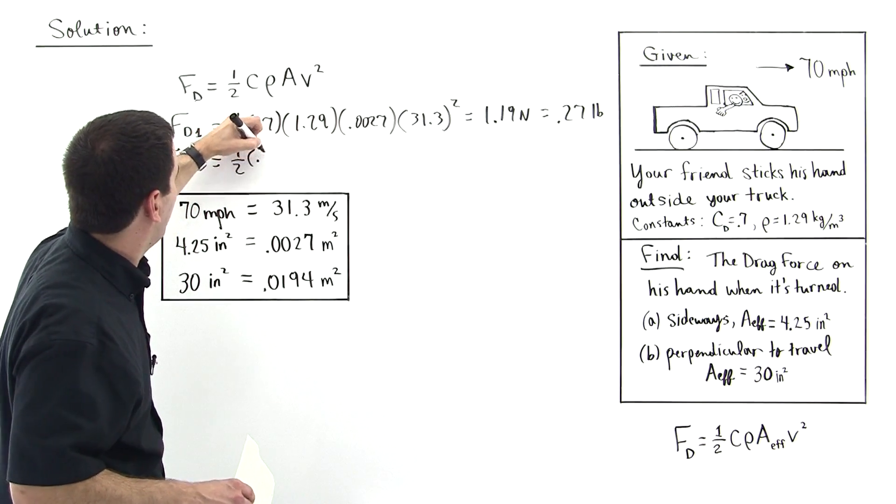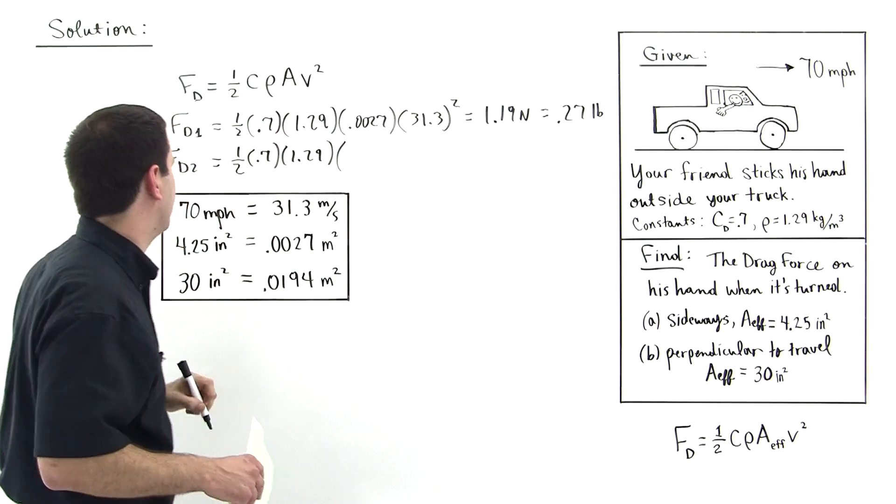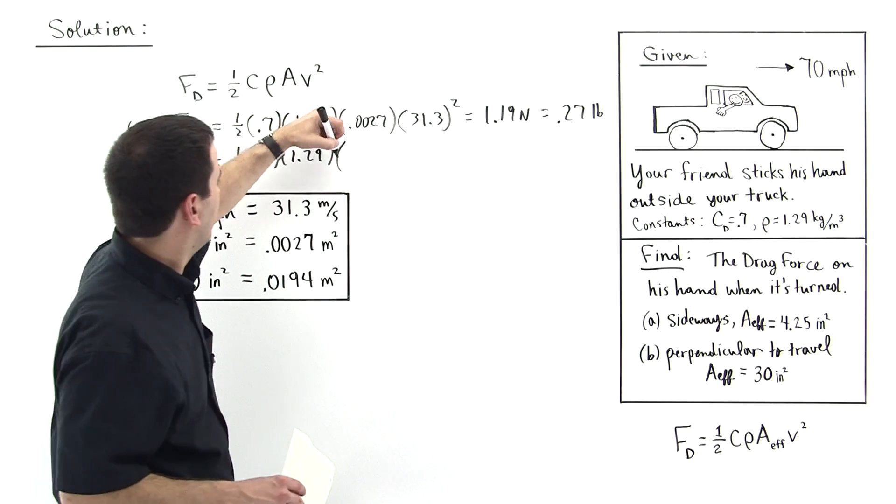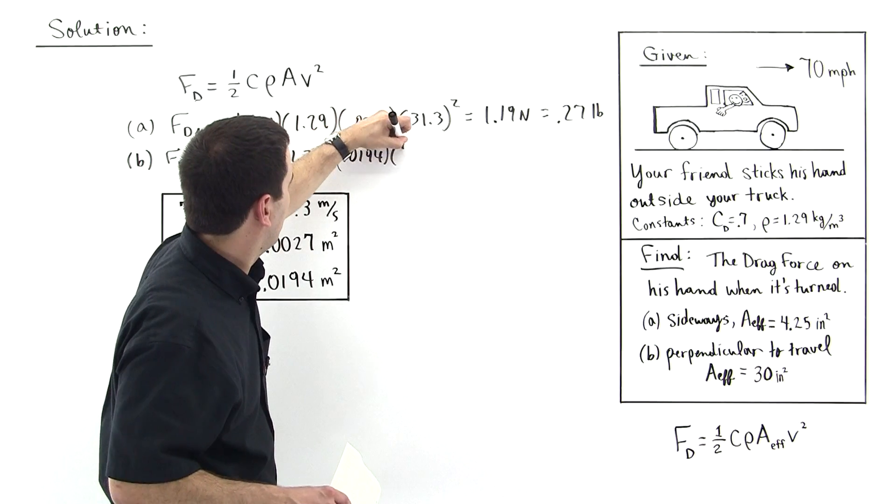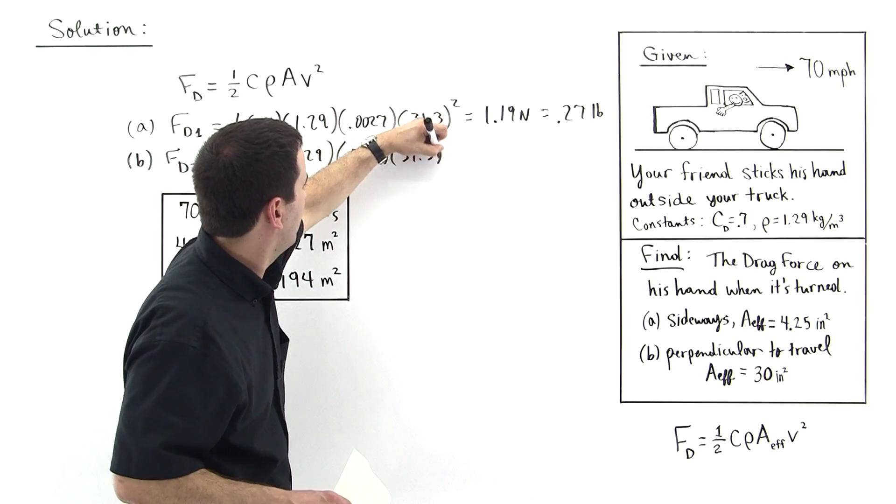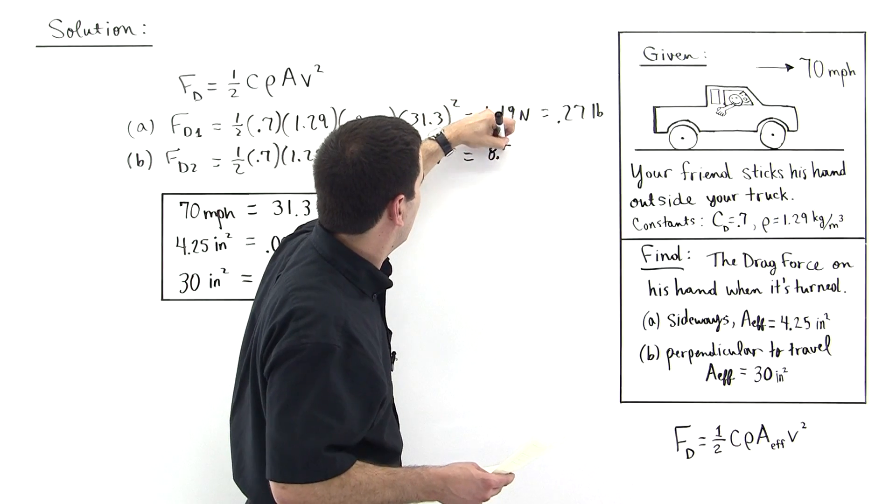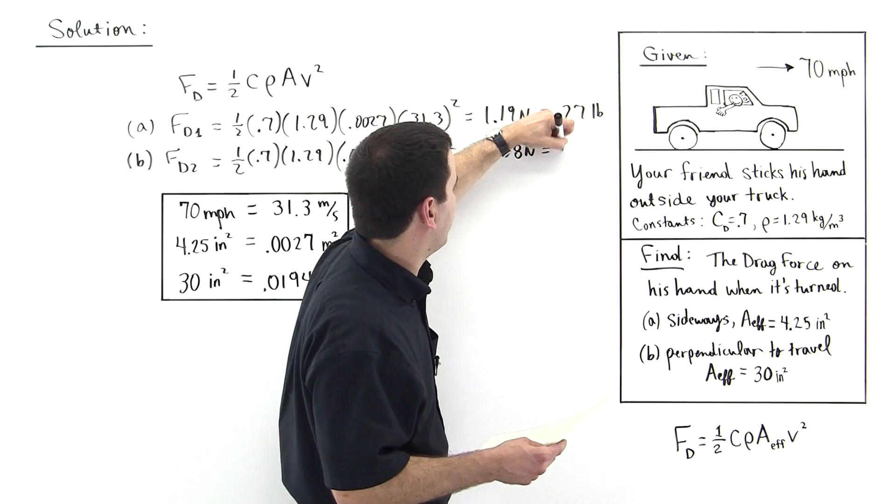0.7, 1.29, same numbers, and then this number changes. This number is a little bit bigger, we see, 0.0194, 31.3. We calculate this number is 8.58 newtons, and that's equal to 1.93 pounds.